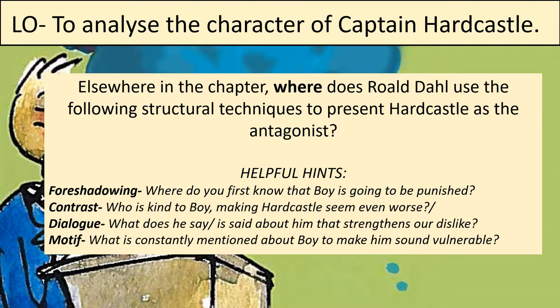Now I want you to think about elsewhere in the chapter, where Roald Dahl uses the following structural techniques to present Hardcastle as the antagonist: foreshadowing, contrast, dialogue, and motifs. For foreshadowing, where do you first get hints that Roald Dahl is going to be punished — or that Captain Hardcastle likes to punish students? For contrast, who is kind to Boy, making Hardcastle seem even worse? Are there any kind teachers at the school, and how does that make Hardcastle seem stricter by comparison? Like in school — if one teacher lets things slide, it can make a stricter teacher seem even meaner.